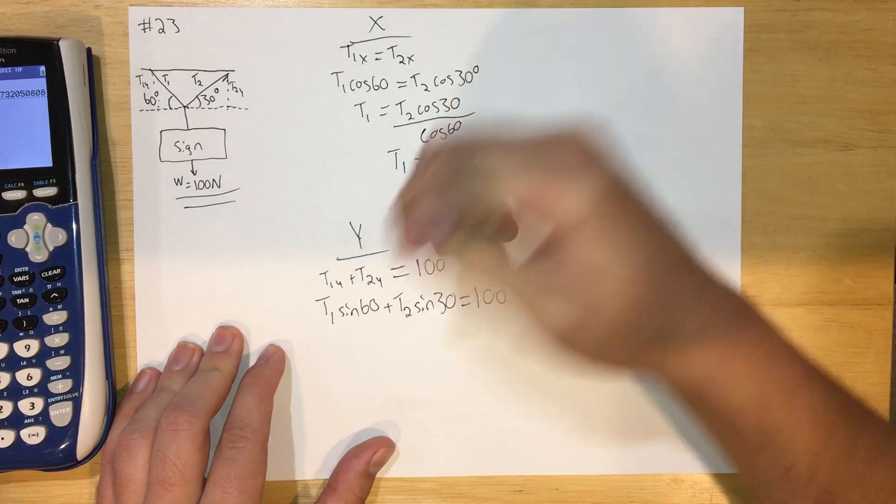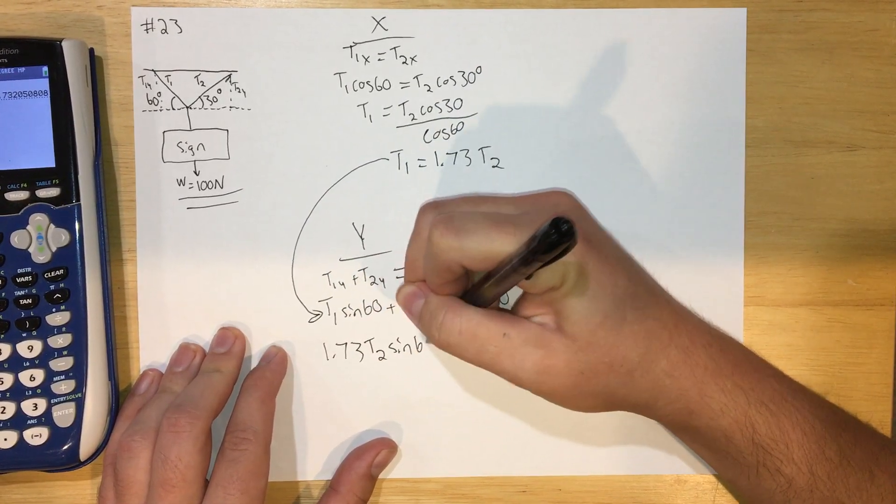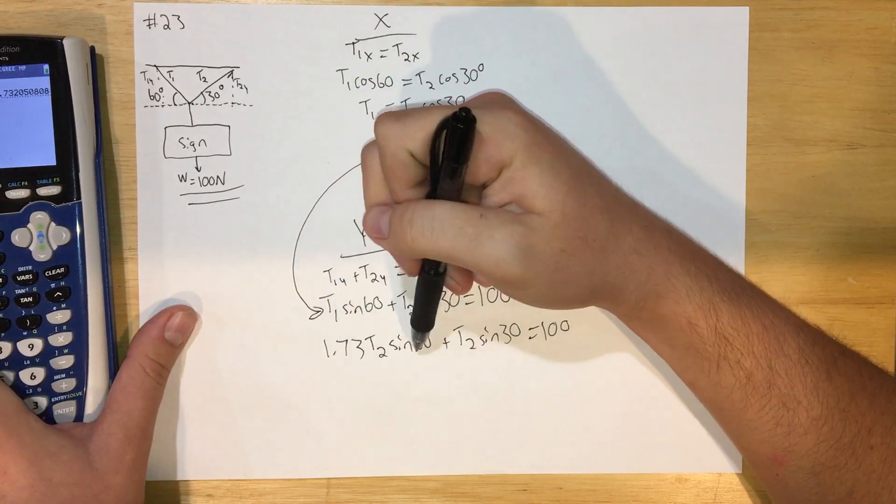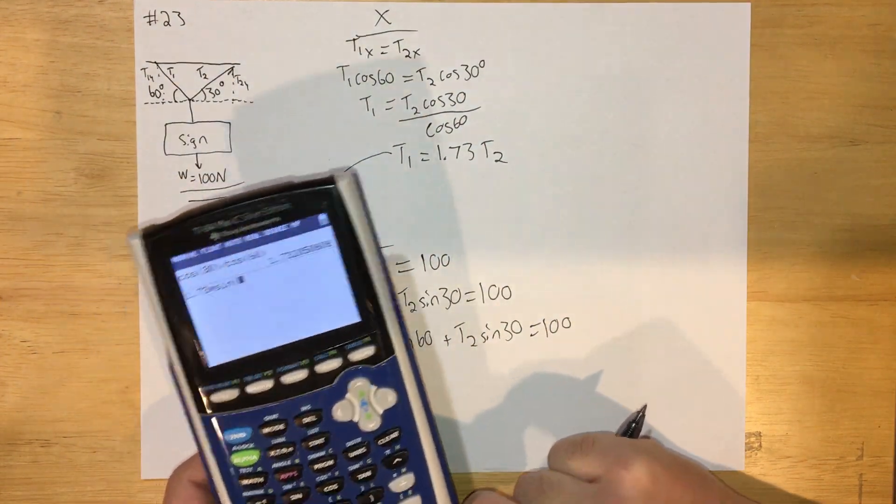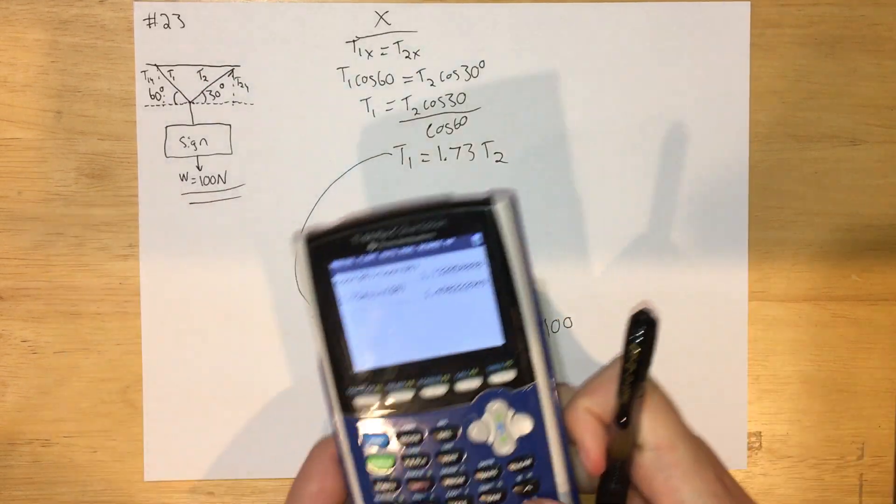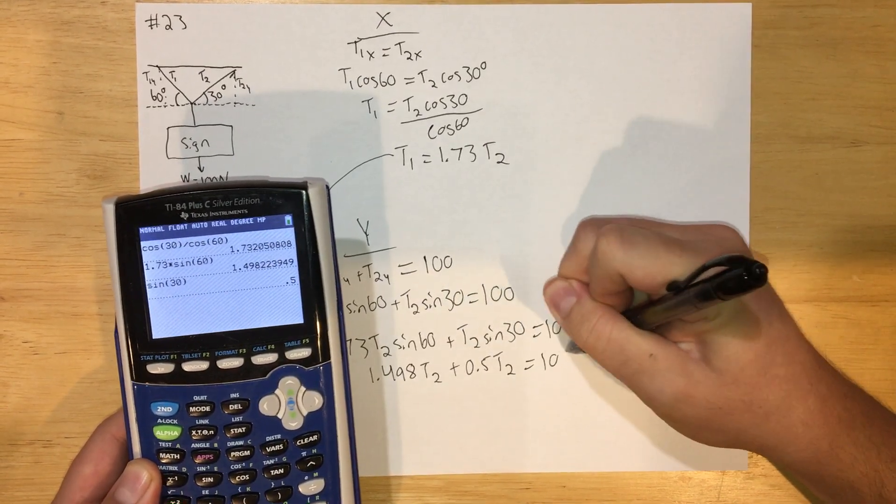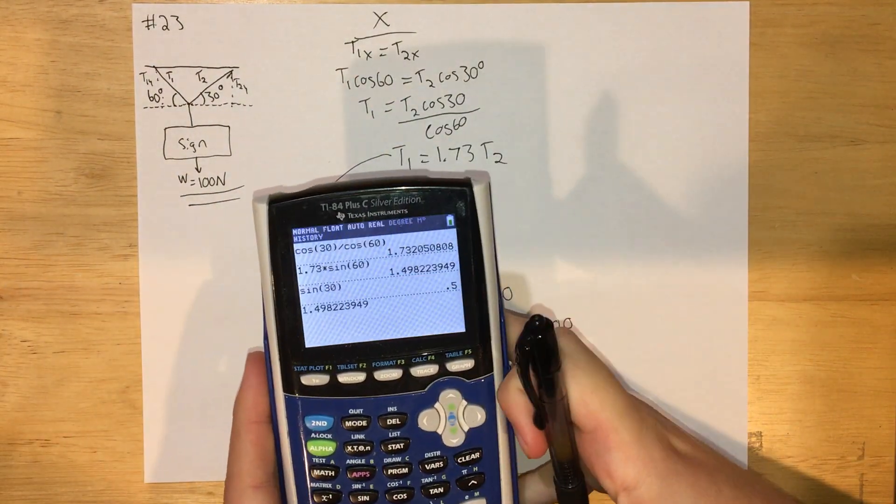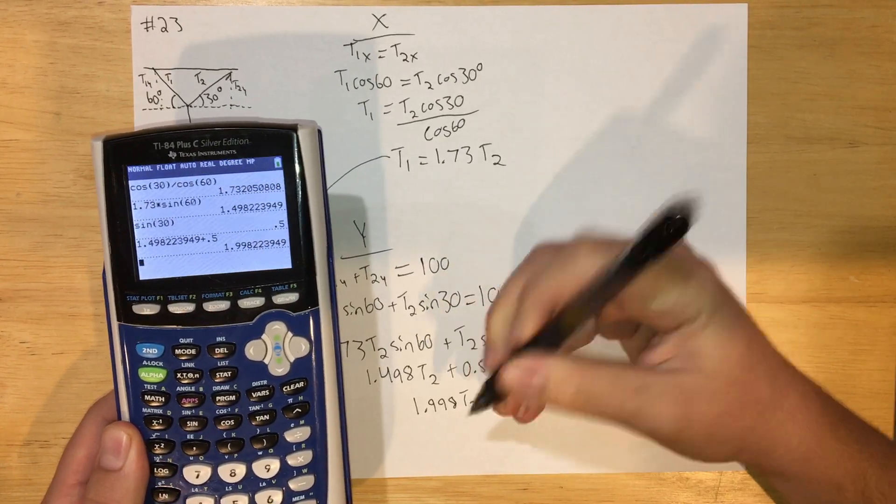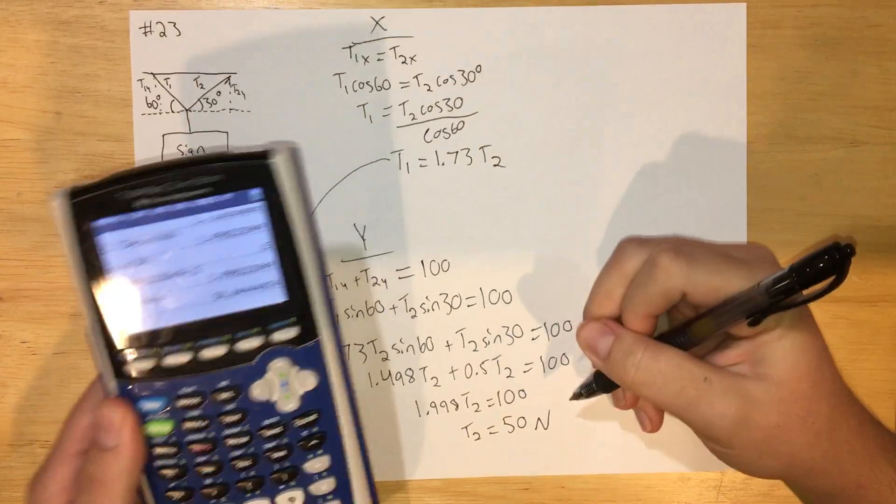Okay, so now I'm going to plug in T1 into T1, so I'm taking this and plugging it in here. So 1.73 T2 sine of 60 plus T2 sine of 30 equals 100. Now I can figure out what the sine values are. So 1.73 times sine 60 equals 1.498, so this becomes 1.498 T2. And then sine of 30 is 0.5, so this becomes 0.5 T2. I can add these T2 together, so I'm going to do that with my calculator now. And I get 1.998 T2 equals 100. Divide both sides by 1.998 and I have T2 equals 50 newtons.